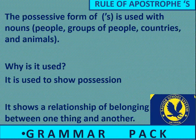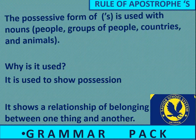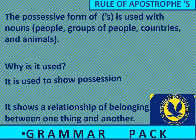The possessive form of apostrophe s is used with nouns — people, groups of people, countries, and animals. It is used to show possession; it shows a relationship of belonging between one thing and another. Apostrophe s dho cheezon ka aapas mein taluq banata hai, yani koon si cheez kis ki malkiyat hai.